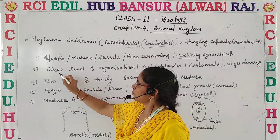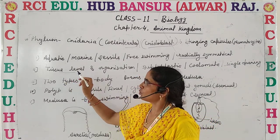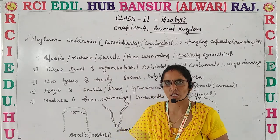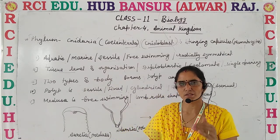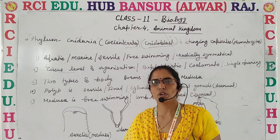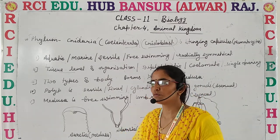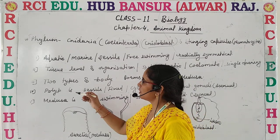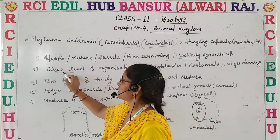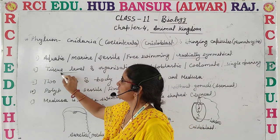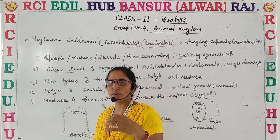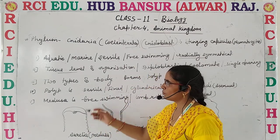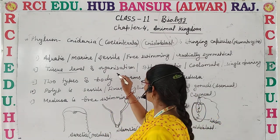We discussed that the cellular level of organization involves specific cells which perform body functions. But here in Coelenterata, we have the tissue level of organization, where cells combine together to perform specific functions. This is called tissue level of organization.